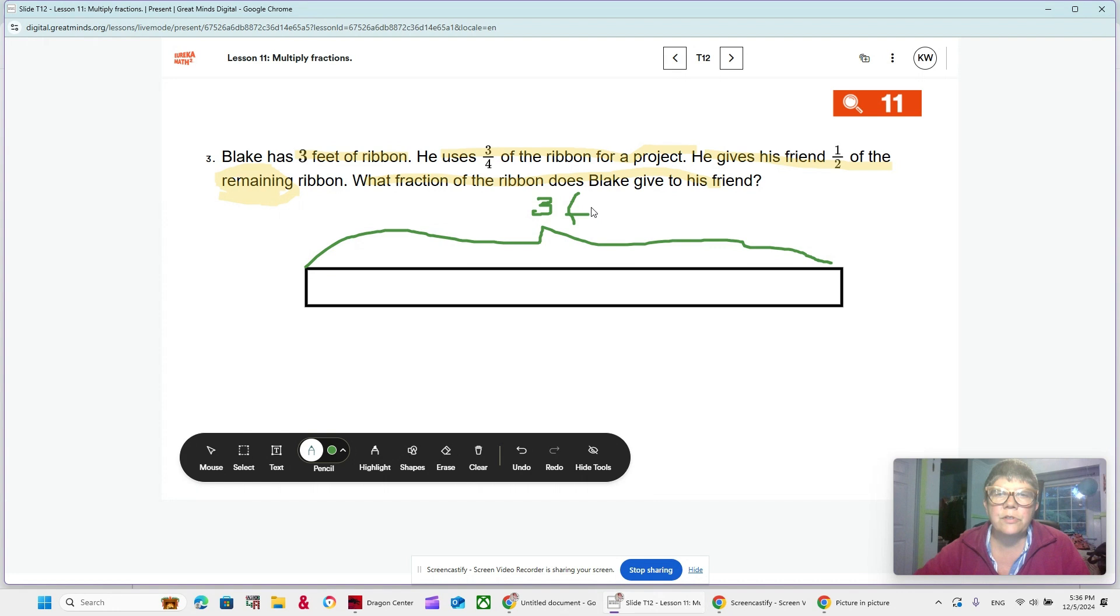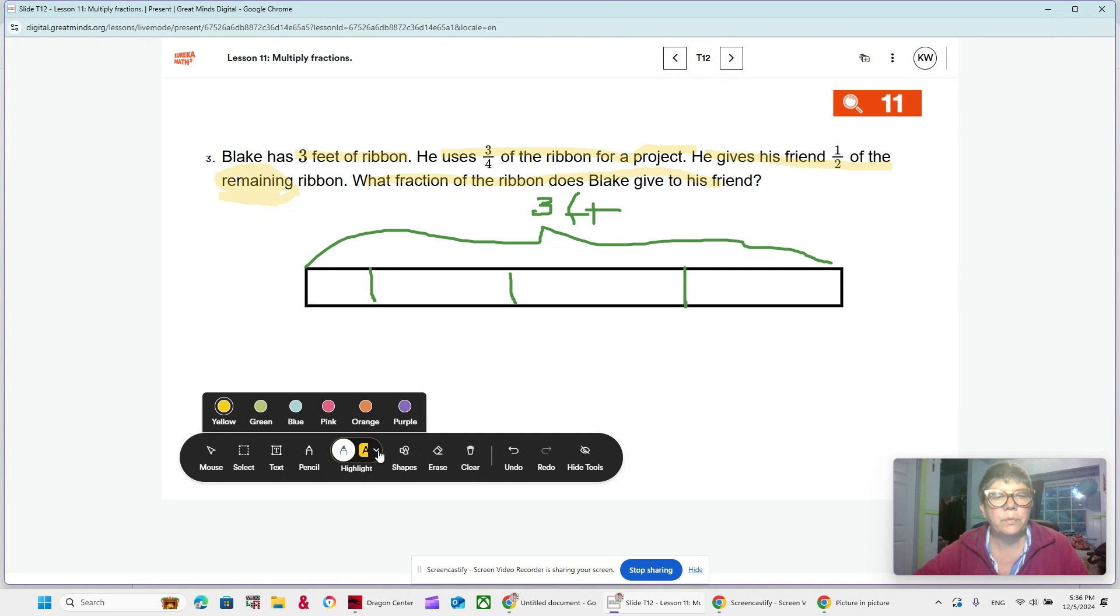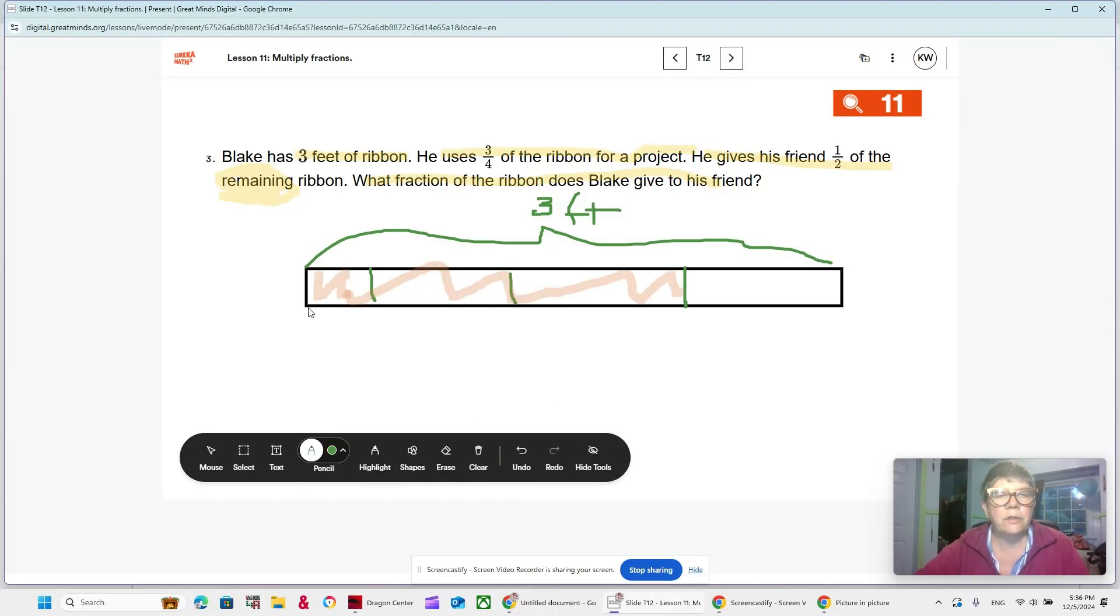And he uses three-fourths of it. So, that means we need to break our tape diagram into four parts, and they don't have to be perfect. You know, none of us can draw that perfectly. We're just going to put it in there, and then I'm going to use my highlighter to kind of color in three-fourths, right? Three out of four. And I might also mark it down here. This is my three-fourths. This is what I'm using for the project. Project equals three-fourths.